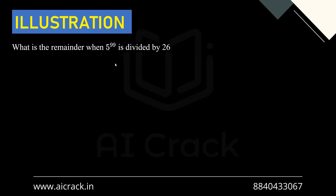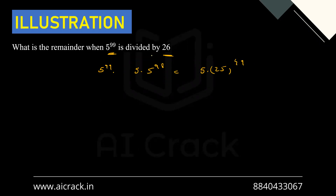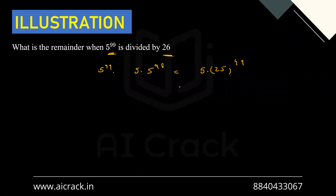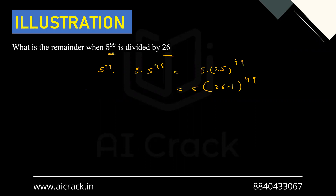Now let's look at the next example: what is the remainder when 5^99 is divided by 26? At first there seems to be no correlation between 5 and 26, but if I write 5^99 as 5·5^98 = 5·(5²)^49 = 5·25^49, I can see a correlation. I can relate 25 and 26 by writing this as 5·(26-1)^49.